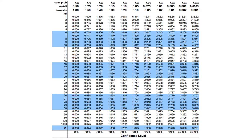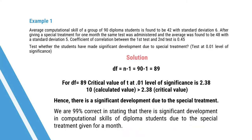Referring to the t-table for degree of freedom 89, the critical value of T at the 0.01 level of significance is 2.38. The calculated value 10 is greater than the critical value 2.38. Hence, there is significant development due to the special training. We are 99% confident in stating that there is significant development in the computational skill of diploma students due to the special training given for one month.